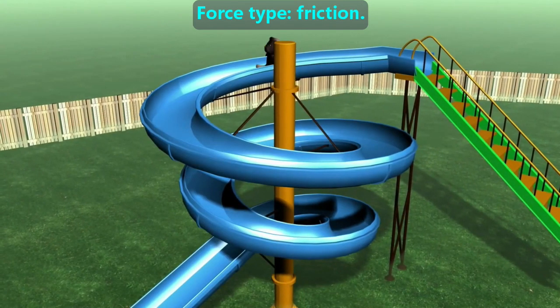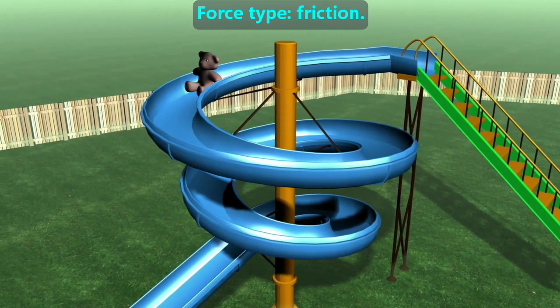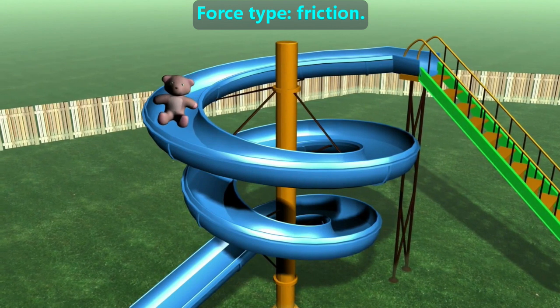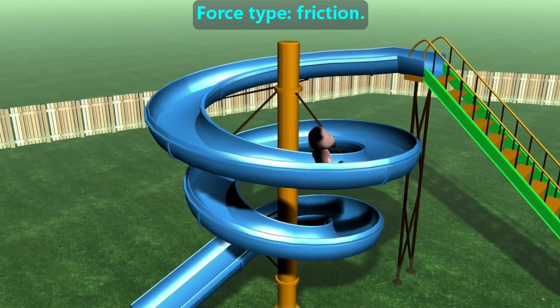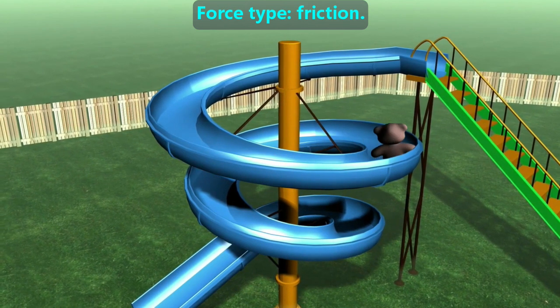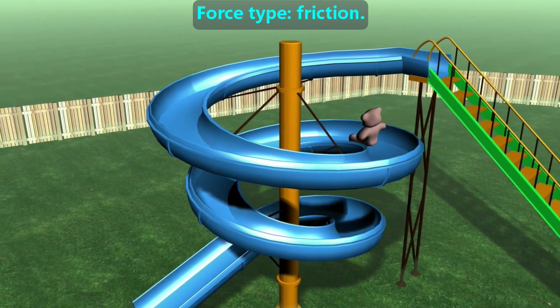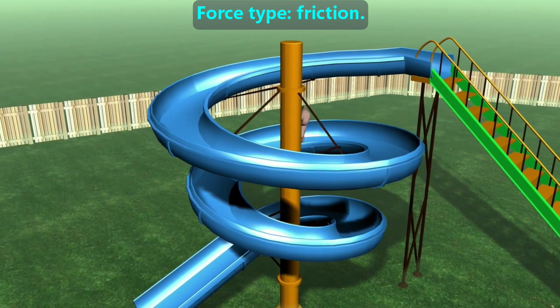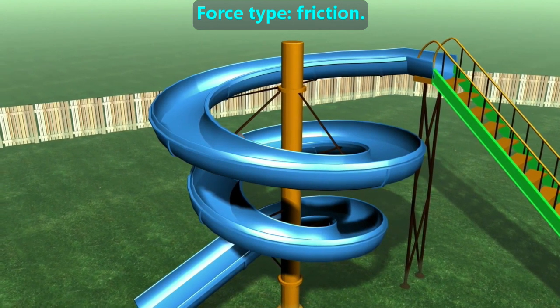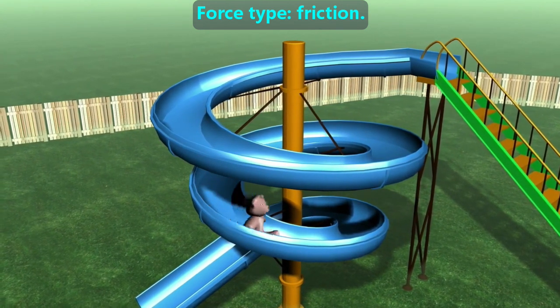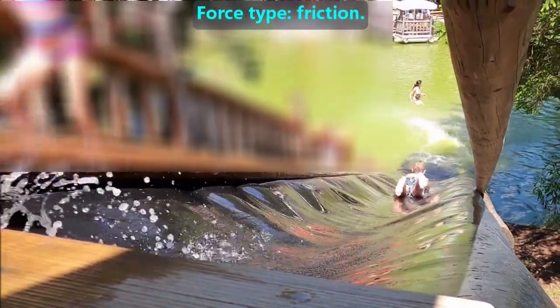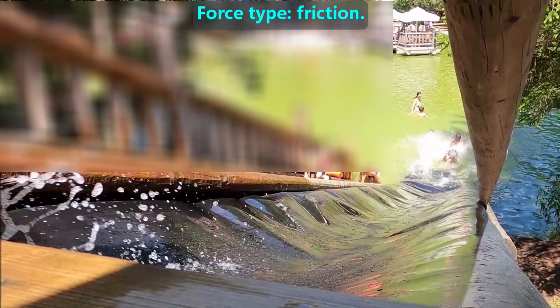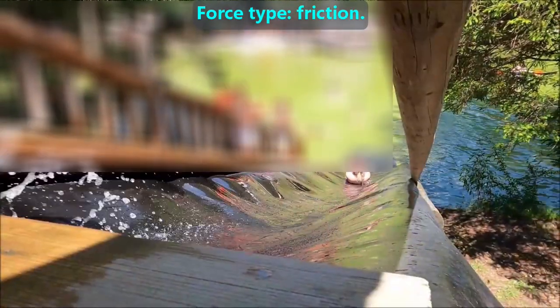The next force is friction. This contact force is the name we give when two objects rub against each other and often causes one of them to slow down. For example, a regular slide like this has a lot of friction between the metal and the clothes of the person, or in this case, the teddy bear's legs. That friction is preventing the teddy bear from going fast. But if we add some water to a slide, there is less friction, and our bodies slip over the surface much faster.